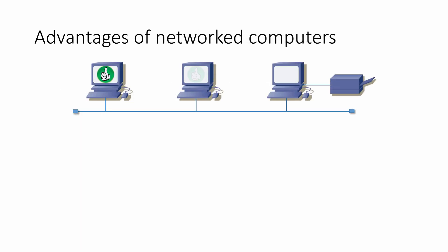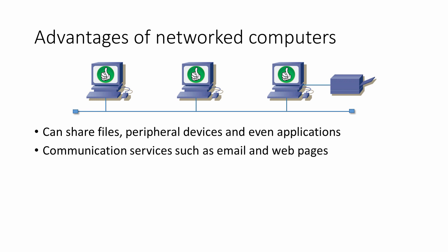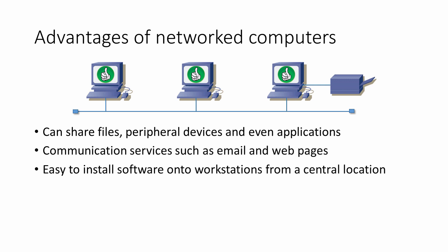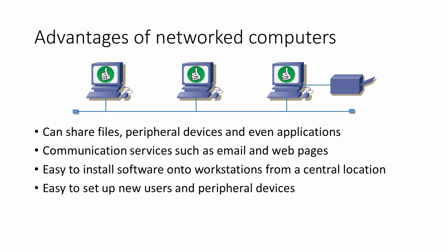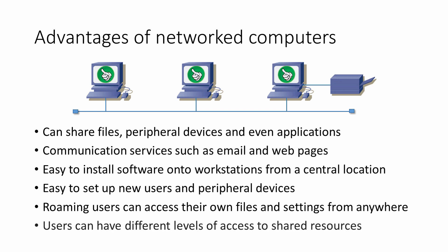What are the advantages of a network? Users can share files, peripheral devices, and even applications. Communication services such as email and web pages can be made available on a network. It's easy to install software onto workstations from a central location, and easy to set up new users and peripheral devices. Roaming users can access their own files and settings from anywhere — they can log on at any workstation. Different users can have different levels of access to shared resources, with some files and folders visible to some people but not others.